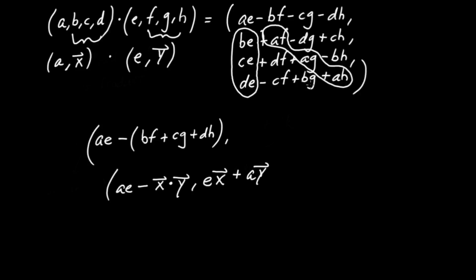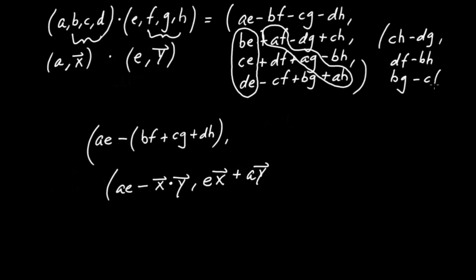And then what I have left are these six terms: one, two, three, four, five, and six. Let me pull each of those terms out. The first component of the new three-vector is CH minus DG. The second component is DF minus BH. And the third is BG minus CF. And if you want to take a wild guess as to what this new three-vector was called — this was defined as the cross product between x and y.